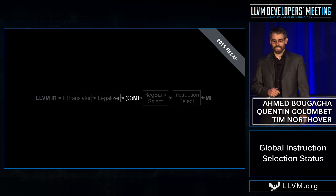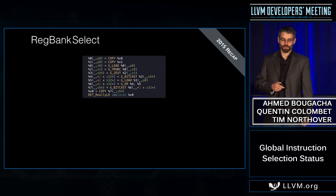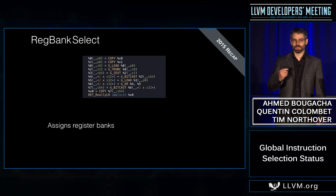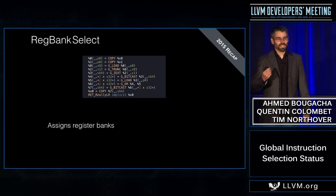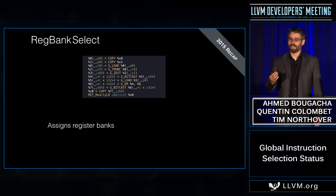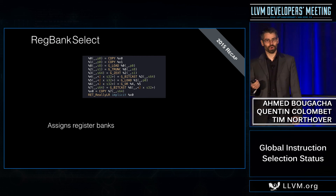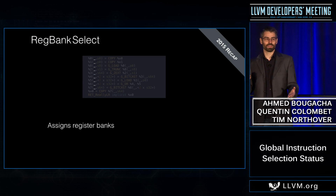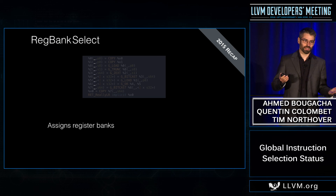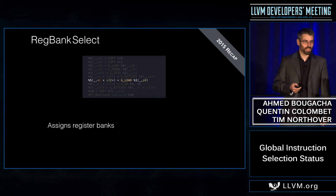Now let's move to the next pass. This pass is new in the GlobalISel framework — it's not something you could do with SelectionDAG. This is RegBankSelect. RegBankSelect's responsibility is to assign register banks. Register banks represent roughly where a value will live. For instance, on AArch64 there are two register banks: the GPR register bank for every scalar value, and the FPR register bank for floating point and vector types.